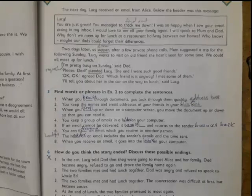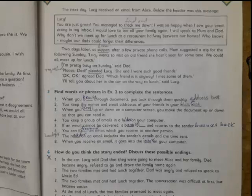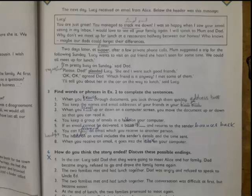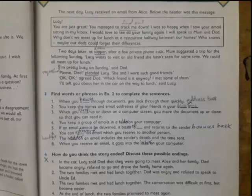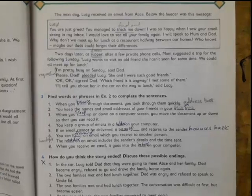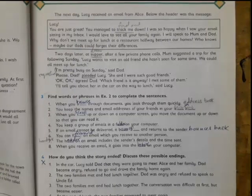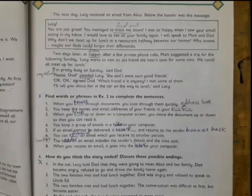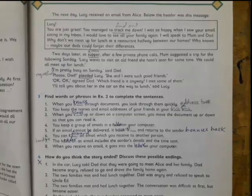Okay, okay, I agree Dad. Which friend is it anyway? I met some of them. I will tell you about her in the car on the way to lunch, said Lucy. Now after some calls, mother decided to pretend that they are going to meet a friend of Lucy, but actually they were asking father to meet the girl, but in actually they wanted to see the uncle and their family.